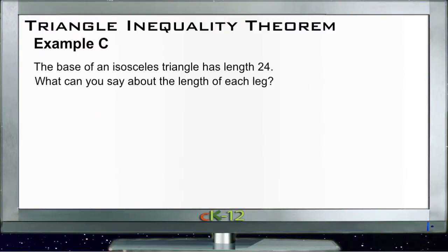And then finally, let's take a look at example C. Example C tells us that the base of an isosceles triangle has a length of 24. What can we say about the length of each leg?